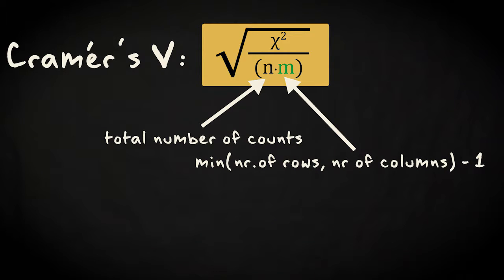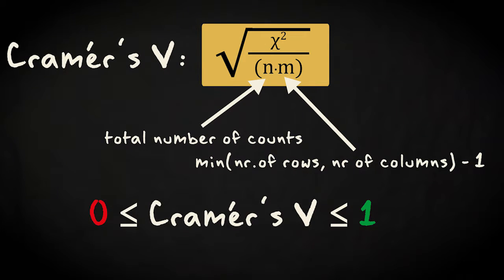The value for Cramer's V ranges from zero to one, regardless of the size of a contingency table. The value of zero means that there is no association between the variables and the value of one means that there is a perfect association. This is the case when you would know the category for one variable if you knew the category of the other.